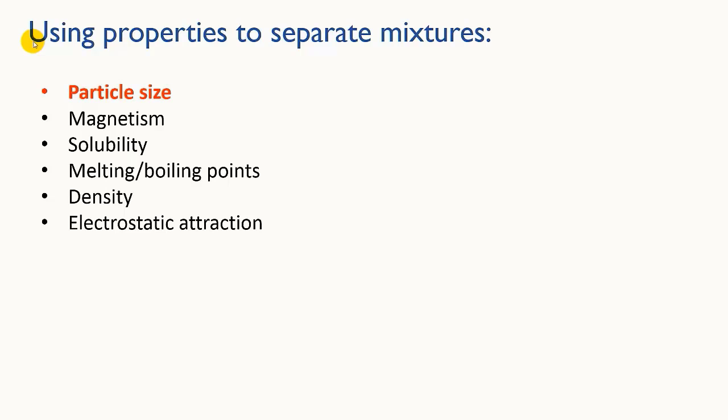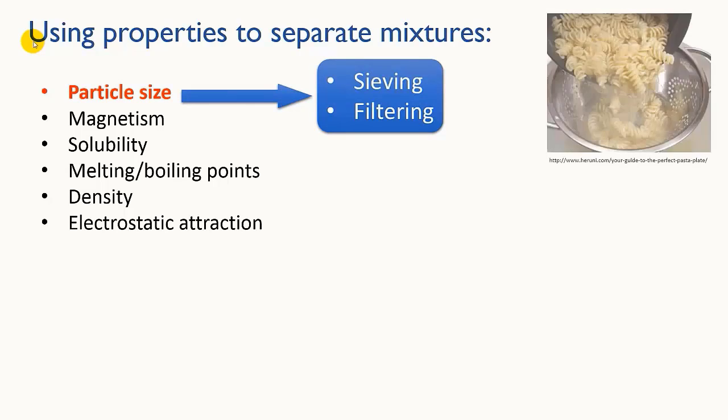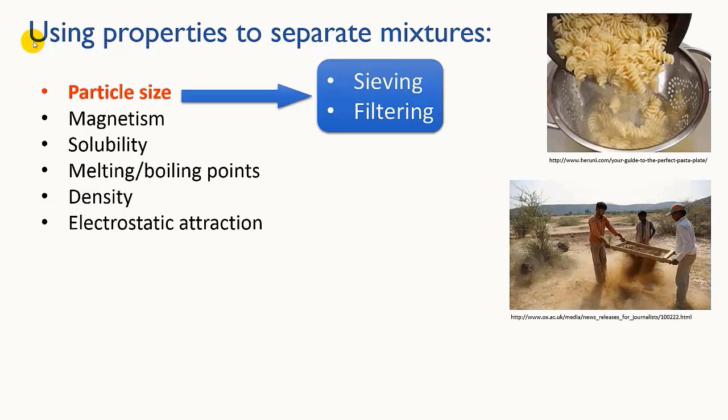The first one, and perhaps the one you'd have most experience with in everyday life, is particle size. If the components of a mixture are of different sizes, then some kind of filter can be used to separate them out. When you drain the water from pasta in a colander, you're filtering. The big pieces of pasta stay behind while the water flows through the holes of the colander. These archaeologists are using a wire mesh to sift dirt to find artifacts from a dig in India. It uses the same principle.